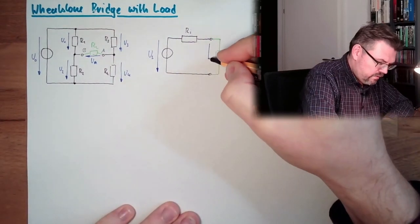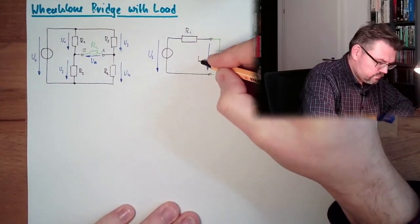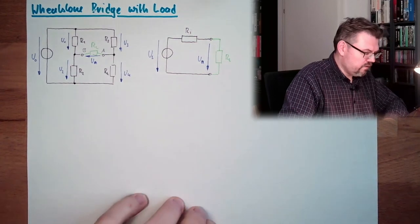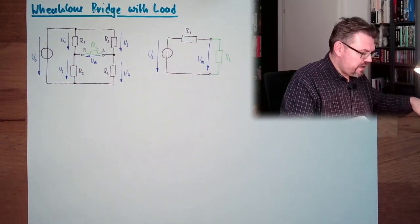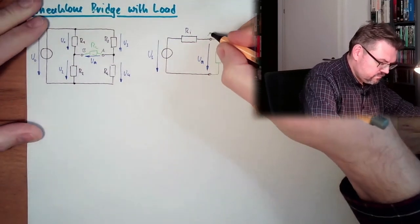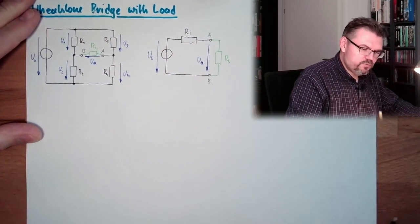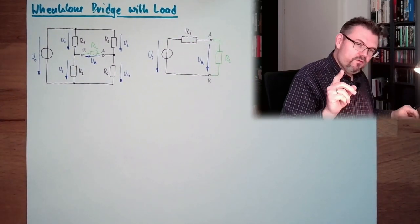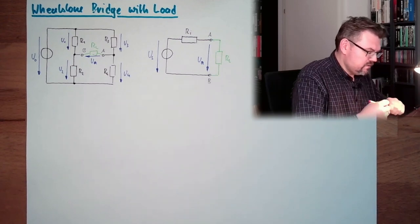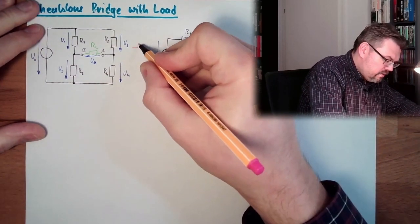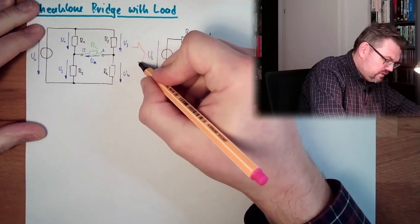We have here Ua, and of course there are still the clamps A and B. This is the transition we're going to make. We're going from here to here because this is much easier.